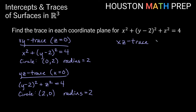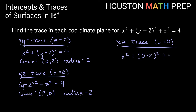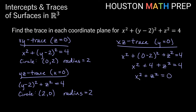Looking at our xz-trace, the other variable y equals 0. But be careful — we still have the (y minus 2) quantity squared term, so we can't just ignore it. We get x squared plus (0 minus 2) quantity squared plus z squared is equal to 4. That negative 2 squared is 4, so x squared plus 4 plus z squared is equal to 4. Subtracting 4 from both sides gives us x squared plus z squared is equal to 0. This looks like a circle with center (0, 0) in the xz-plane, but the radius squared would be 0.